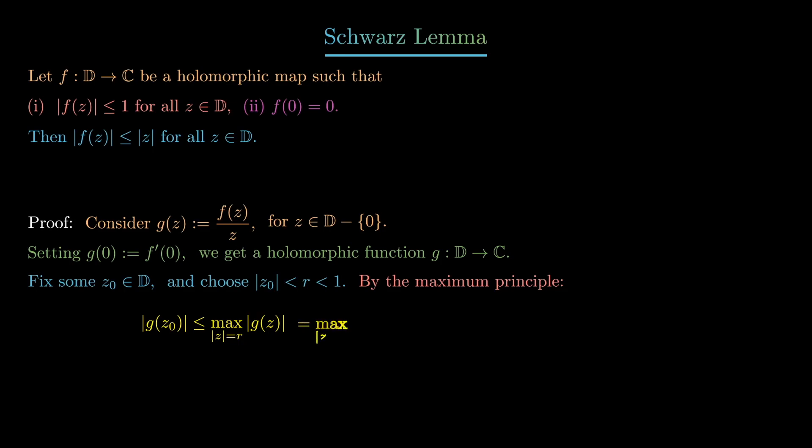If we write out the definition of g, we have the maximum of f(z) over z over the set of z such that mod z equals r, and of course this is less than or equal to 1 over r.